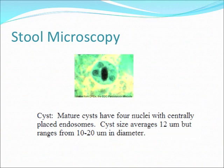This is a cyst. You can see the trophozoite or you can see the cyst. If you see the cyst, most of the time you can see four nuclei — there is one here, one here, one here, and one more here. In order to see all the nuclei, you have to move the microscope, but you will see all four of them.